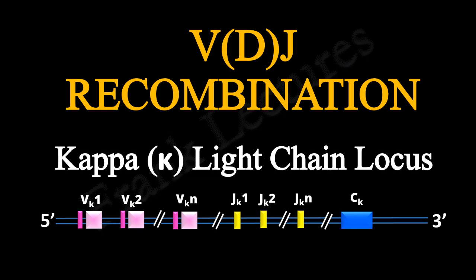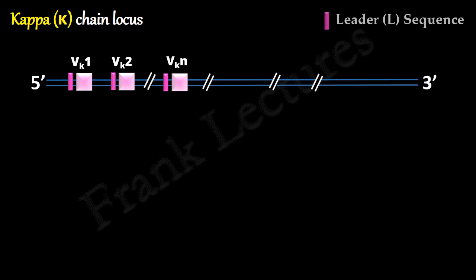For our illustration we will take kappa light chain locus. This is kappa chain locus. These are the V gene segments each preceded by a leader sequence. Next to this cluster of V gene segments is present the J gene segments, and this is the C gene.